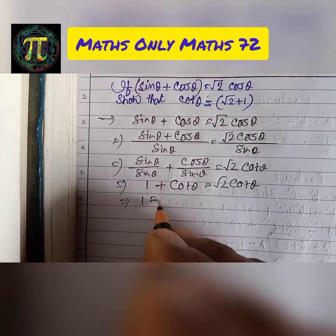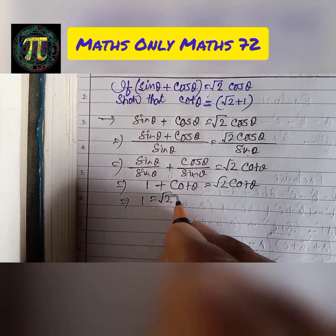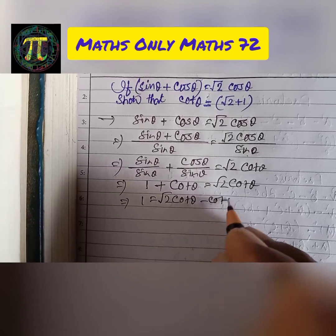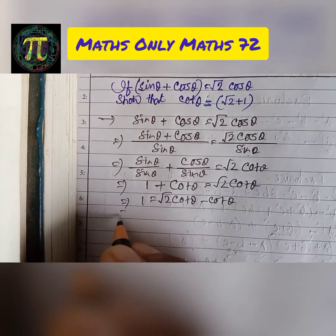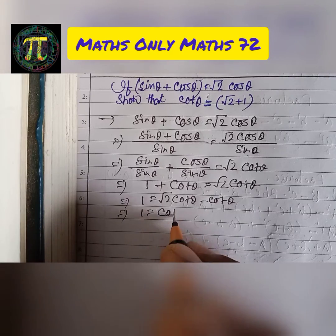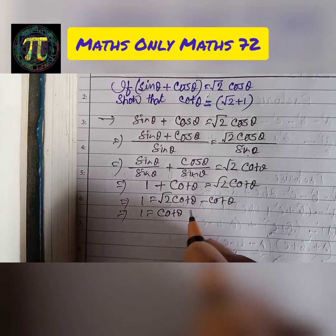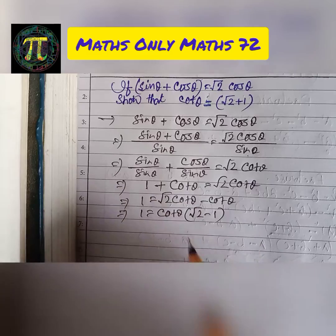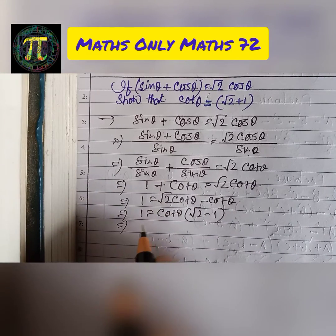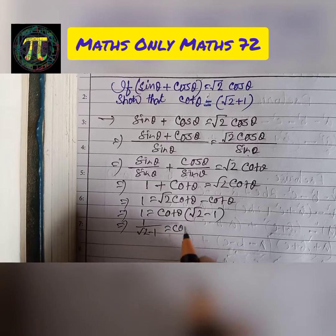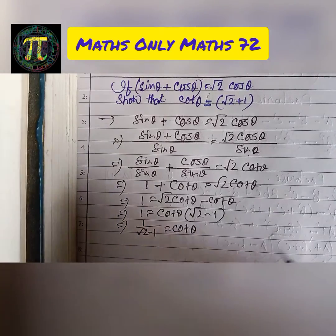1 equals root 2 cot theta minus cot theta. So, 1 equals cot theta times (root 2 minus 1). Therefore, 1 by (root 2 minus 1) equals cot theta.